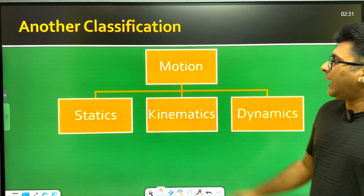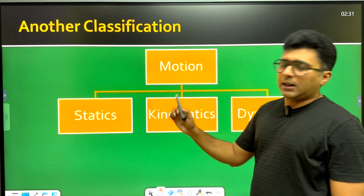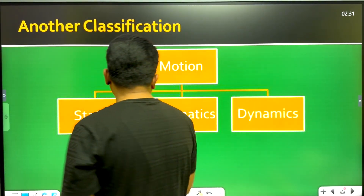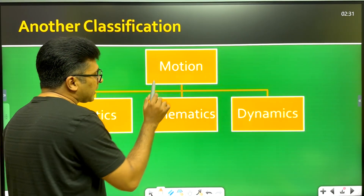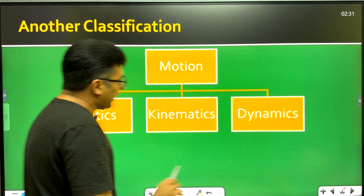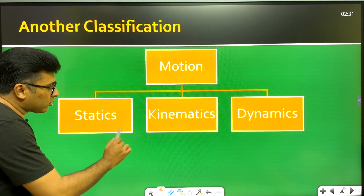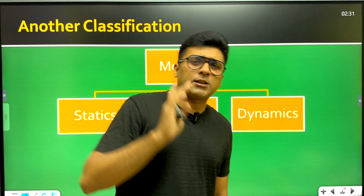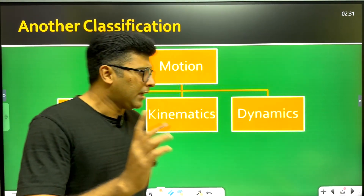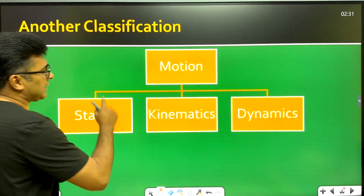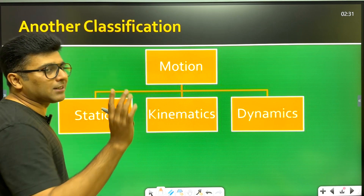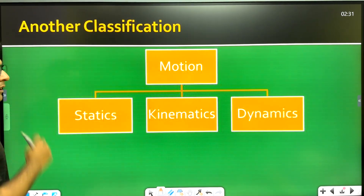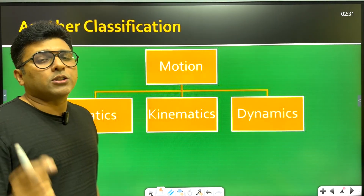Motion in a straight line covers three areas: statics, kinematics, and dynamics. This is a most important question. Statics is the study of objects at rest or in equilibrium.